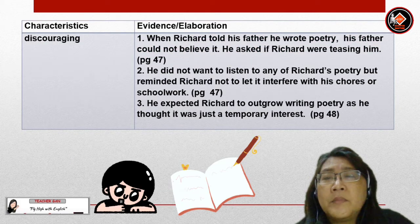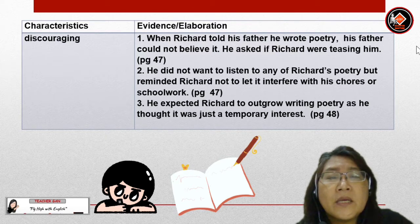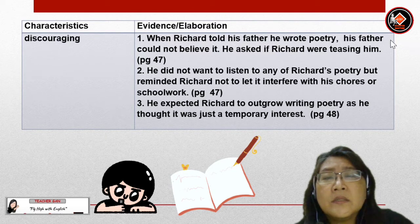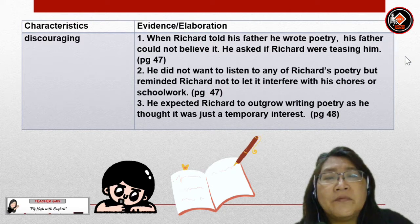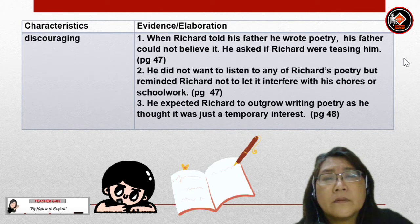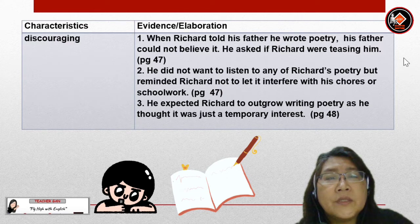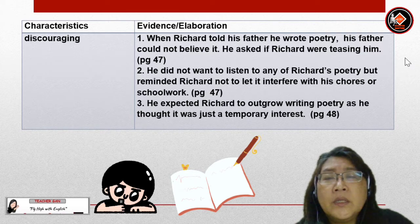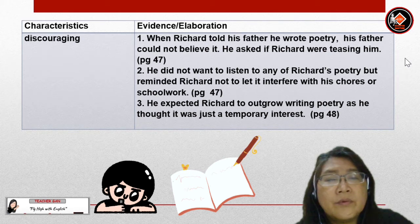Nonetheless, Pa also has negative characteristics. He is discouraging. Evidence: when Richard told his father he wrote poetry, his father could not believe it and asked if Richard were teasing him. He did not want to listen to any of Richard's poetry but reminded Richard not to let it interfere with his chores or schoolwork. He expected Richard to outgrow writing poetry as he thought it was just a temporary interest.